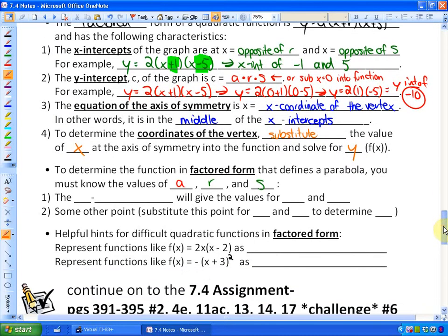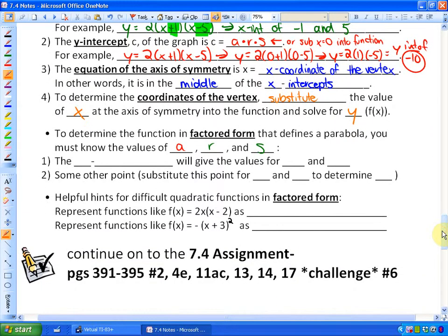Next key idea from the previous lesson: how do we determine the function in factored form that defines a parabola from information? You have to know the values of a, r, and s. First, the x-intercepts - this is the easier part - the x-intercepts always give you the values for r and s. Remember that they're the opposite of the x-intercepts.